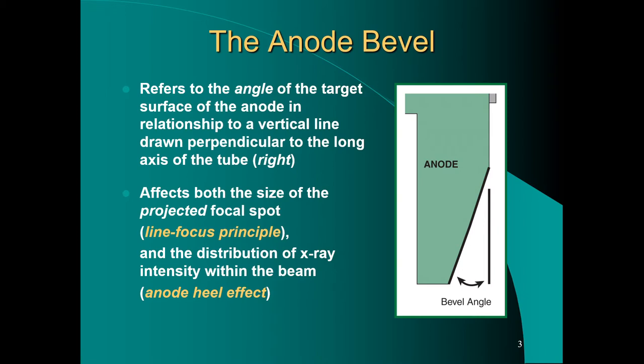The anode, the positive side of the x-ray tube, the spinning tungsten and molybdenum disc, is struck by a high velocity stream of electrons. Our goal here is to slow these electrons down so that we can use their kinetic energy, convert that into electromagnetic radiation, and project them largely downward.